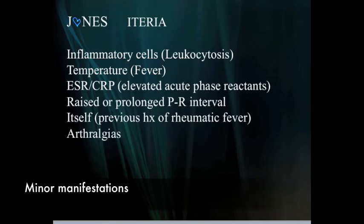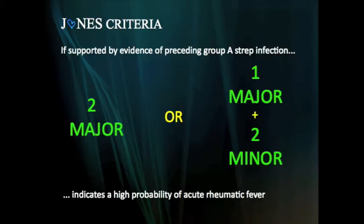And then finally, A is for arthralgias, which are just joint pains. Again, you need two major manifestations or one major and two minor in making the diagnosis.